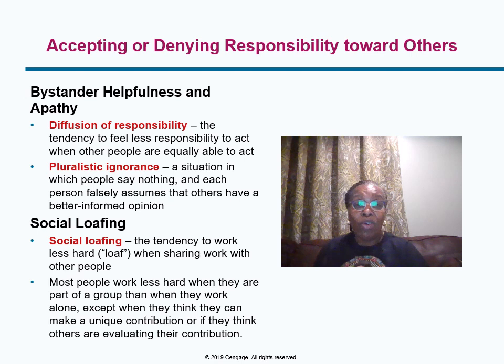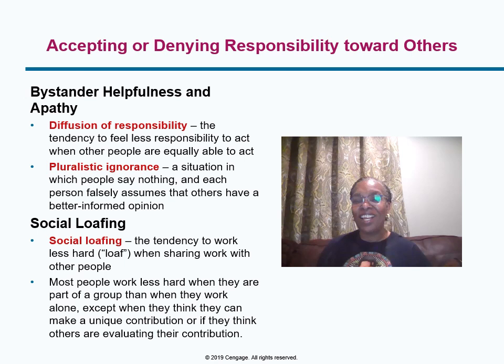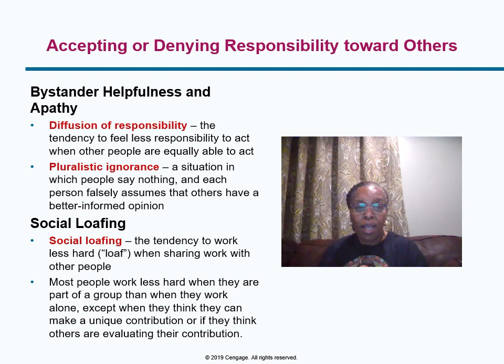Pluralistic ignorance is a situation where people won't say anything and each person falsely assumes that others have a more informed or better opinion. And social loafing is when people are not going to work hard — they're lazy about it, figuring someone else can do it.